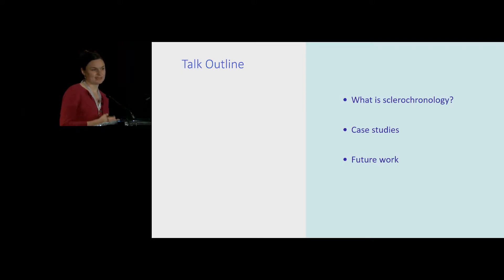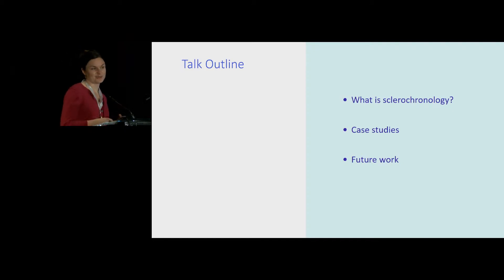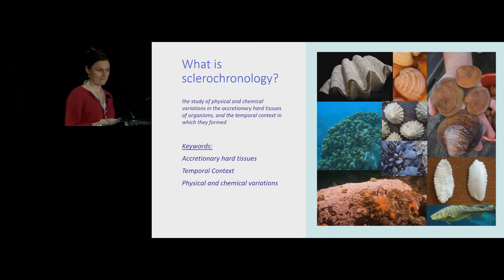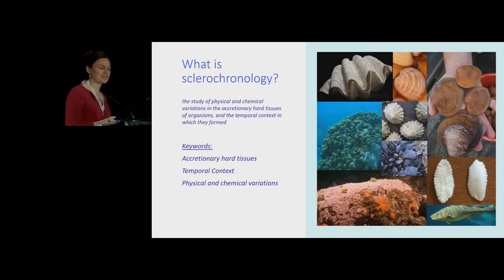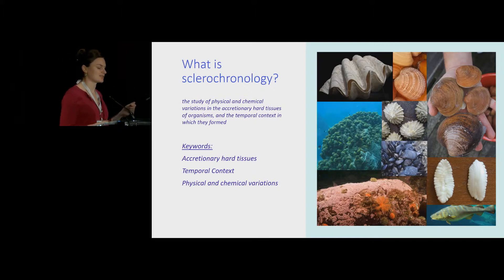I'll first tell you simply what sclerochronology is, give you a few examples of how these methods are applied in climatology and environmental studies, and finish with some notes about directions in the field and where I'd like to go with my own research. The textbook definition of sclerochronology is the study of physical and chemical variations in the accretionary hard tissues of organisms and the temporal context in which they're formed. I'll expand on the three key aspects: accretionary hard tissues, temporal context, and physical and chemical variations.